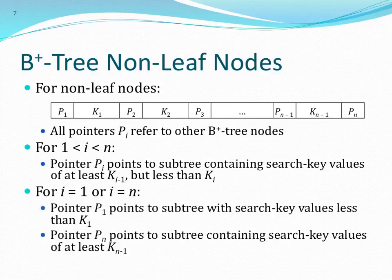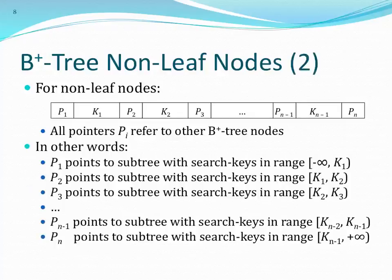P1 is a subtree with search keys in a specific range. Obviously, if this non-leaf has a left sibling, that constrains the minus-infinity bound, and a right sibling constrains the plus-infinity bound. This allows us to navigate non-leaves to get down to the node that actually has the values we care about.